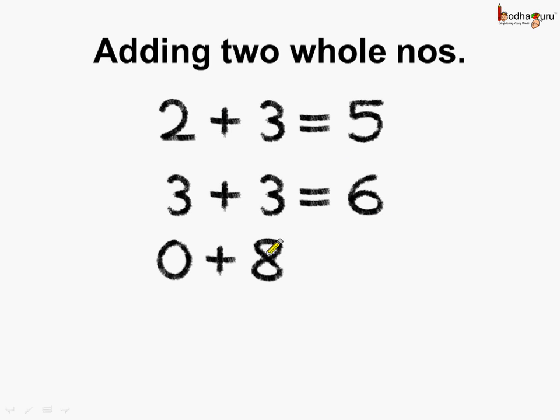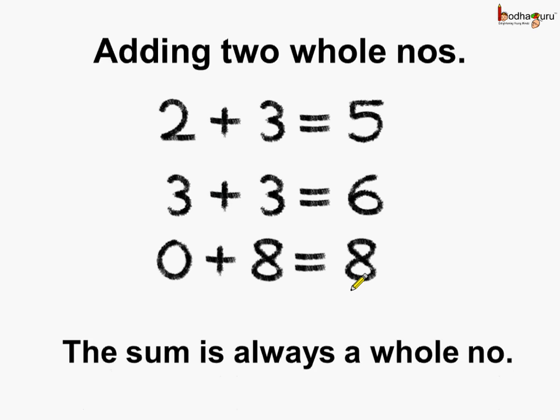Lastly, let us try 0, which is a whole number, plus 8, which is also a whole number. And what is the result we get? The sum is 8 here. And 8 is a whole number. So when we add two whole numbers, what do we get? We get a whole number.